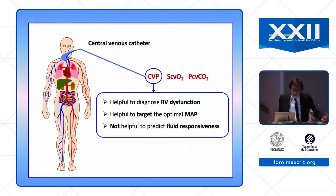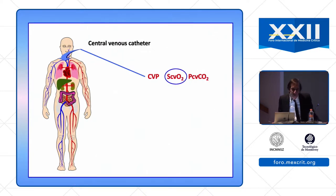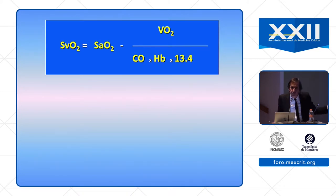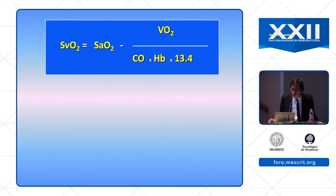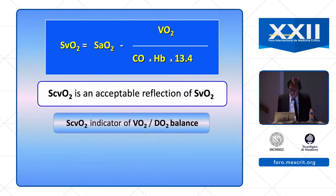CVP is not helpful to predict fluid responsiveness. ScvO2 is also important. As you know, SvO2 equals SaO2 minus the ratio of oxygen consumption VO2 divided by cardiac output times hemoglobin concentration times 13.4. Because many papers show that ScvO2 is an acceptable reflection of SvO2, we can consider ScvO2 as an acceptable indicator of VO2/DO2 balance.